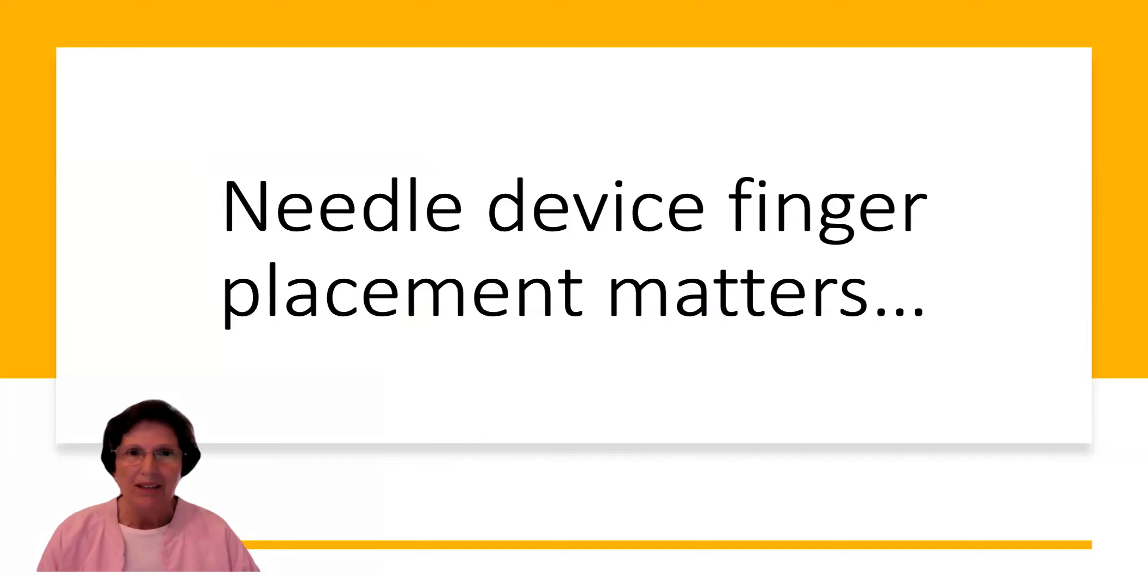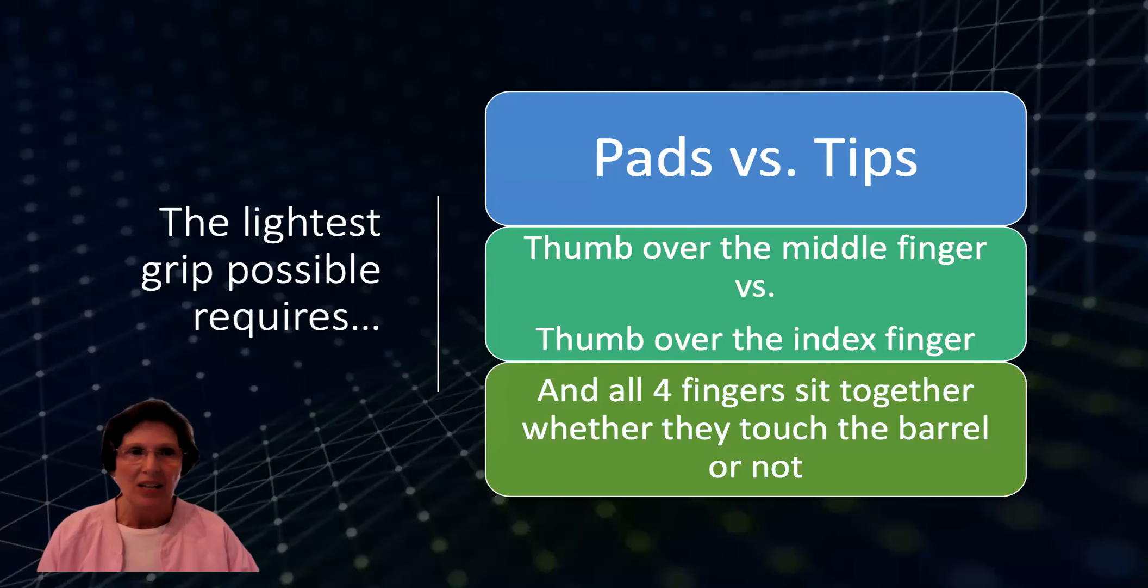In addition, needle device finger placement also matters. Where you place the fingers and how make a difference. The lightest possible grip on a needle system requires that you use the pads of your fingers, not the tips. Thumb over the middle finger versus thumb over the index finger. Again, lightest pressure. And all four fingers sit together whether they touch the barrel or not of any needle attachment.